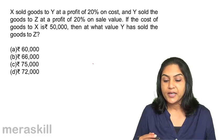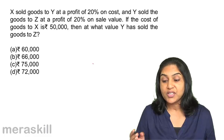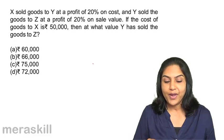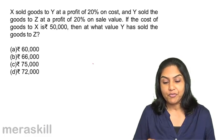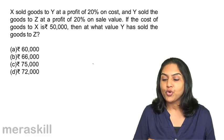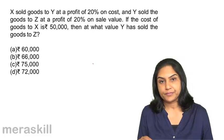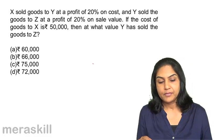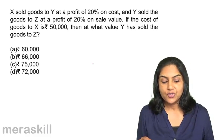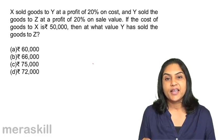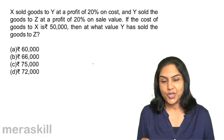Next: X sold goods to Y at a profit of 20% on cost. Y sold goods to Z at a profit of 20% on sale value. If the cost of goods to X is 50,000, then at what value did Y sell the goods to Z? Options: a) 60,000, b) 66,000, c) 75,000, and d) 72,000.